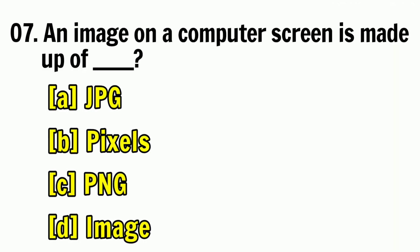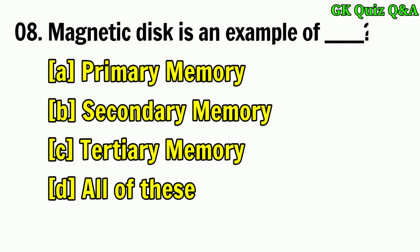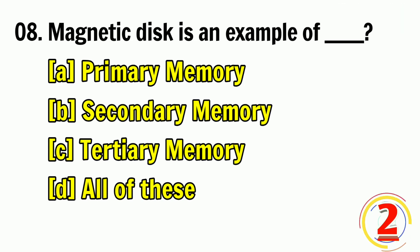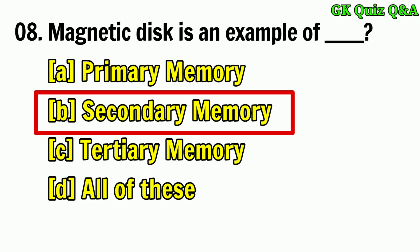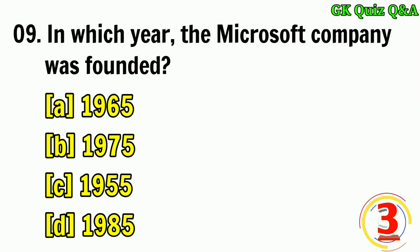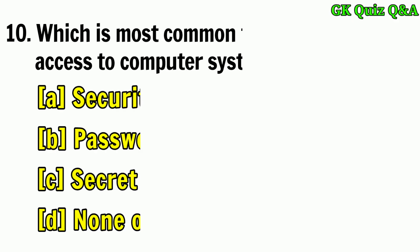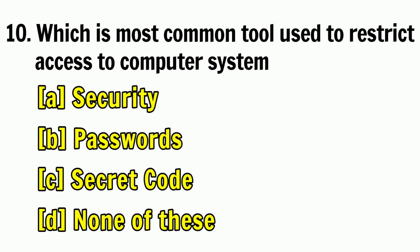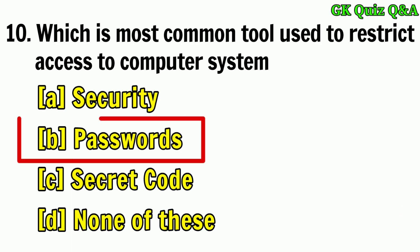An image on a computer screen is made up of — answer: pixel. Magnetic disk is an example of — answer: secondary memory. In which year was the Microsoft company founded? Answer: 1975. Which is the most common tool used to restrict access to a computer system? Answer: password.